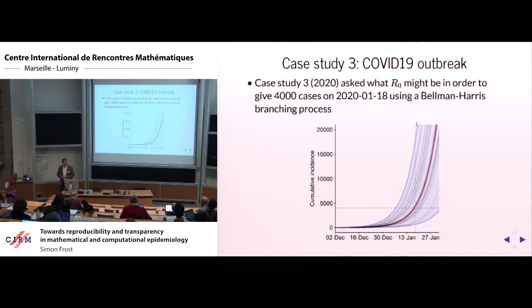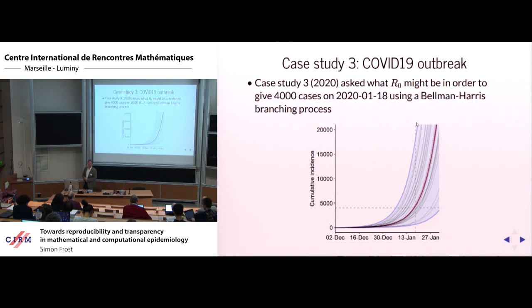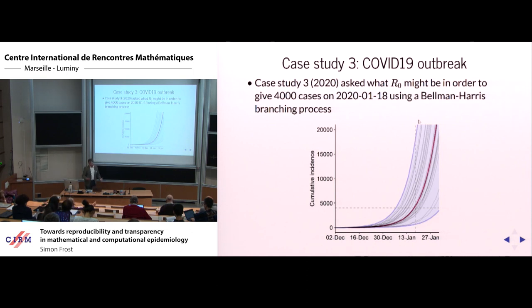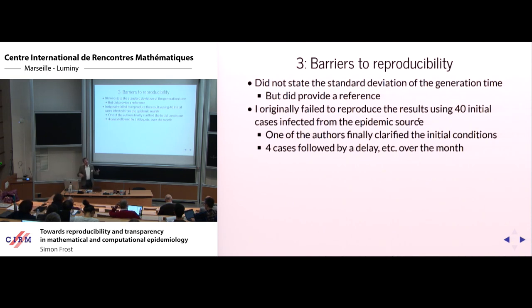Now I'll talk about inference on the novel coronavirus outbreak. One study tried to take a branching process and determine how big R0 would have to be to give around 4,000 cases on the 18th of January. While they didn't call it a Bellman-Harris branching process, that's essentially what it is. Barriers to reproducing those results included: they didn't give the standard deviation of the generation time distribution, though they referenced SARS so most people used that generation time. I still couldn't reproduce their results based on the statement that they started with 40 initial infectives.